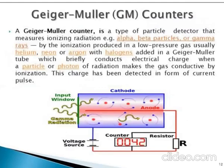The Geiger-Müller (GM) counter is a particle detector which measures ionizing radiation — whether alpha, beta, or gamma. It produces ionization in a low-pressure gas, usually helium, neon, or argon with a halogen added inside the GM tube. The tube briefly conducts electrical charge when a particle or photon of radiation passes through, making the gas conductive by ionization, and the charge produced is detected in the form of a current pulse.